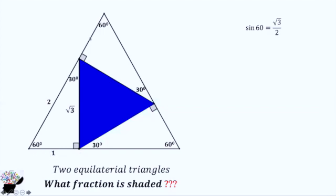This side is the same as this side. So if this side is 1, this side is also 1. The side of the bigger triangle is 2.